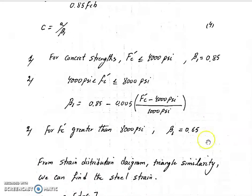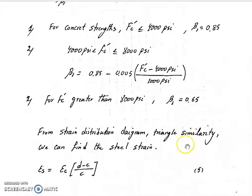Using the strain distribution diagram and triangle similarity, we can find the strain in our steel, which is epsilon s equals epsilon c (strain in concrete) multiplied by d minus c over c.